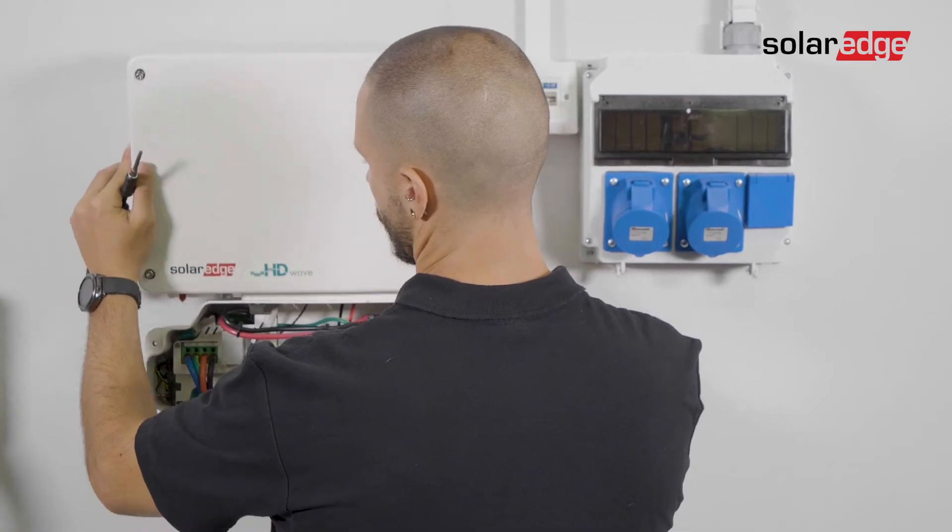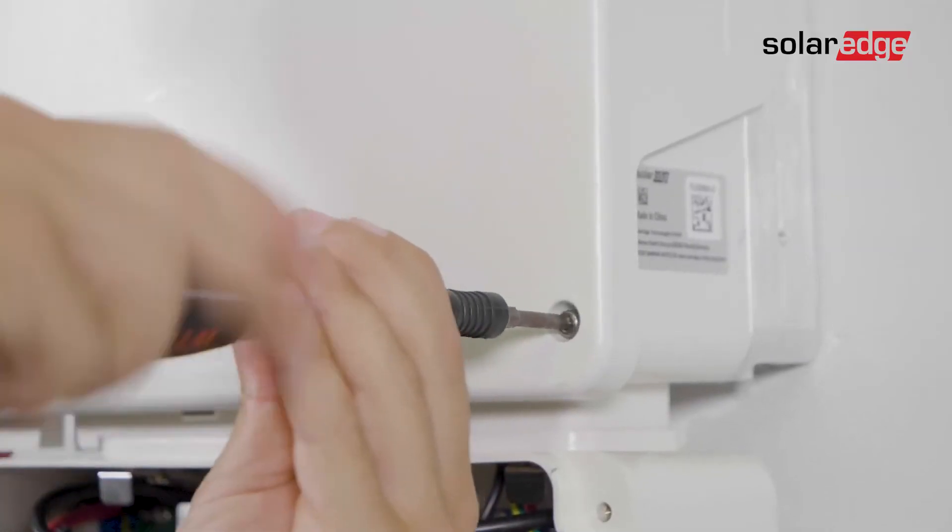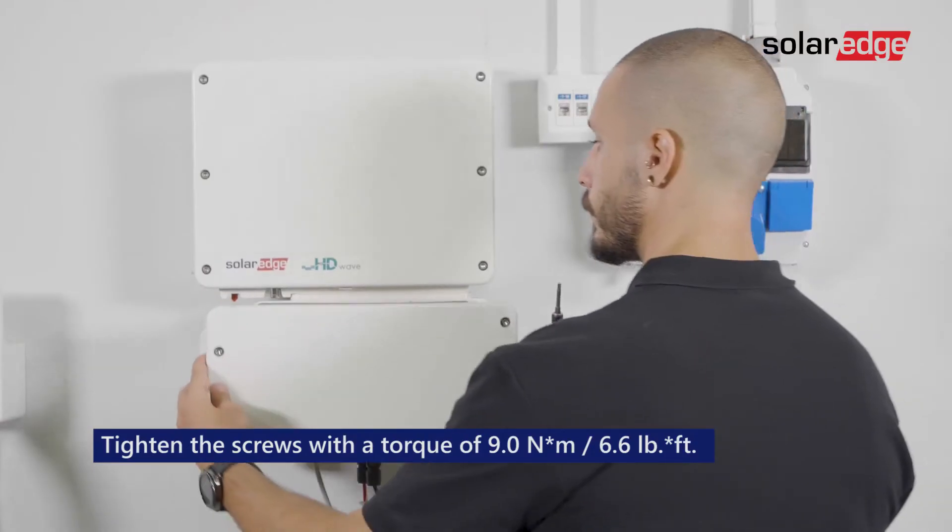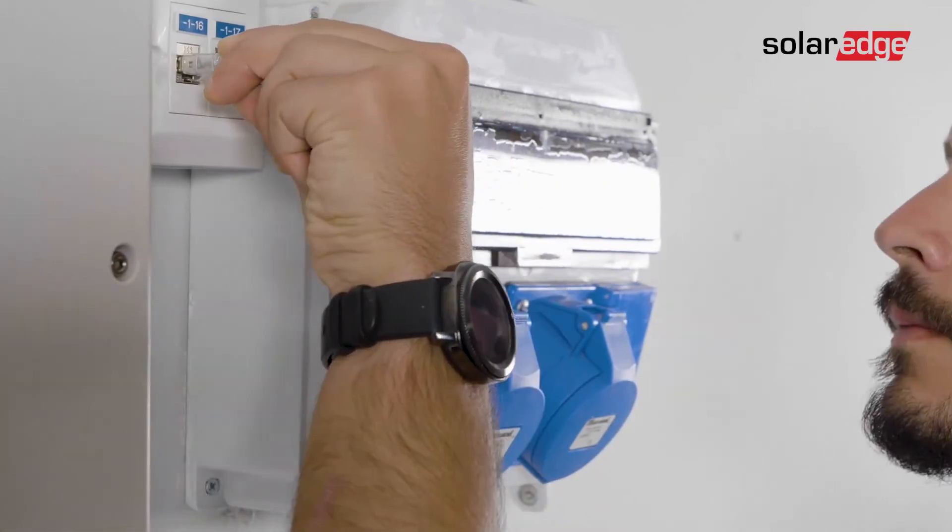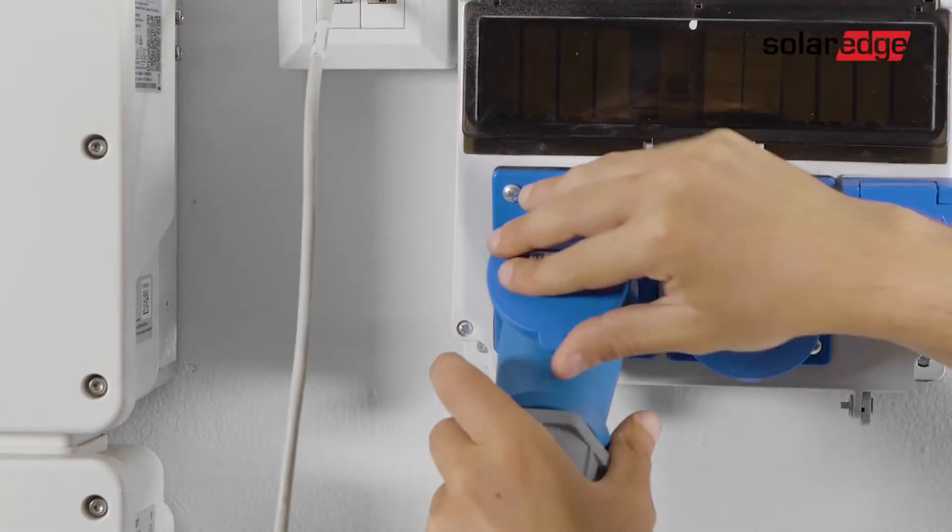Now close the inverter and the connection unit covers. Connect the inverter to Ethernet then to AC and turn on the AC circuit breaker.